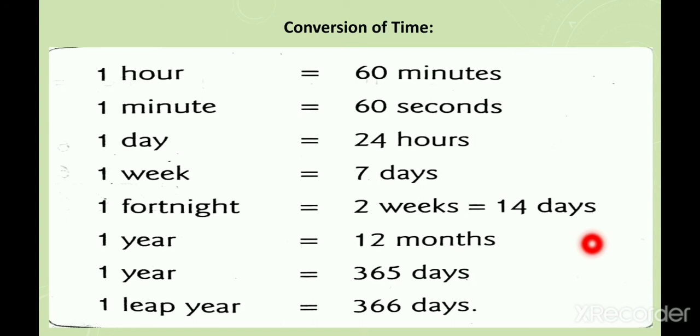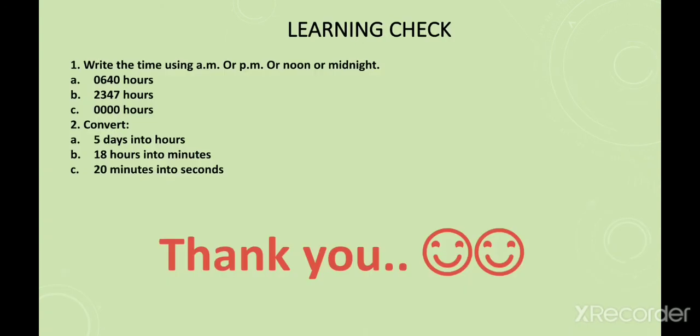For example, if you want to know how many minutes are in 4 hours, you have to multiply 4 by 60 because you are converting a higher unit into a lower unit, so you need to multiply.